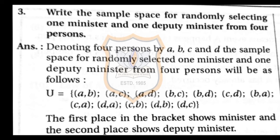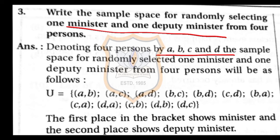Question 3: Write the sample space for randomly selecting 1 minister and 1 deputy minister from 4 persons A, B, C, D. Taking A as minister, the deputy can be B, C, or D: giving (A,B), (A,C), (A,D). Taking B as minister: (B,C), (B,D), (B,A). Taking C as minister: (C,D), (C,A), (C,B).